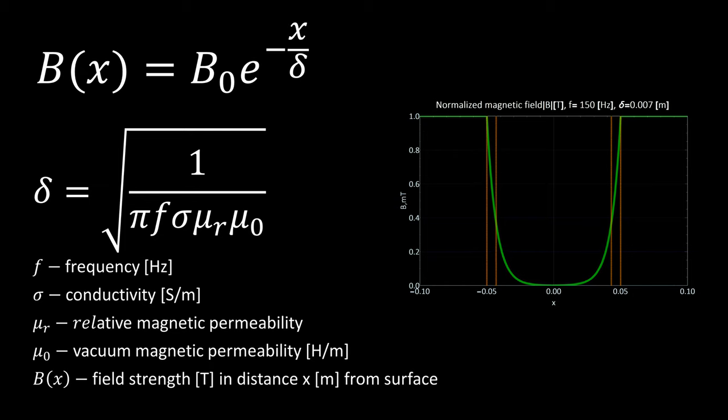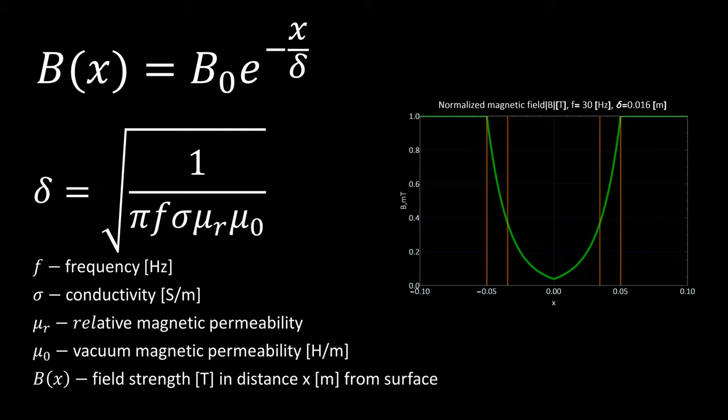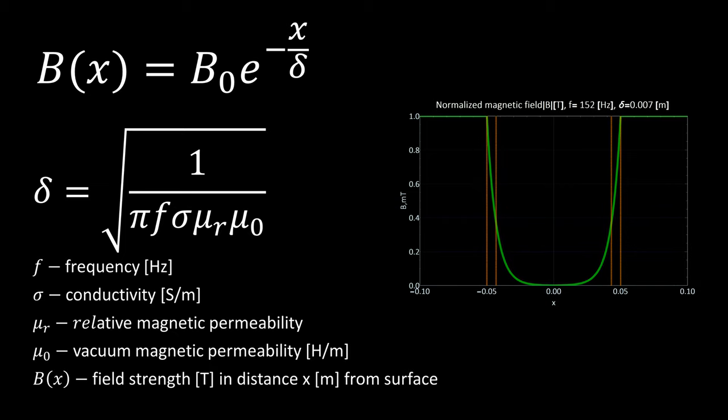And as you can see, material conductivity, magnetic properties and frequency affects it. If we increase whichever variable we can expect skin effect leading to worse penetration of magnetic field if dimensions of our conductor are comparable to skin depth.